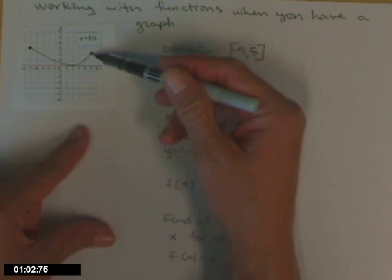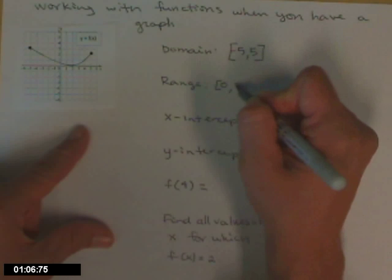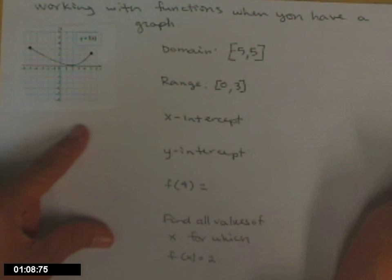And they go all the way up to, over here it goes to the 2, but here it goes all the way up to where y is 3. So 3 is the end of my range.